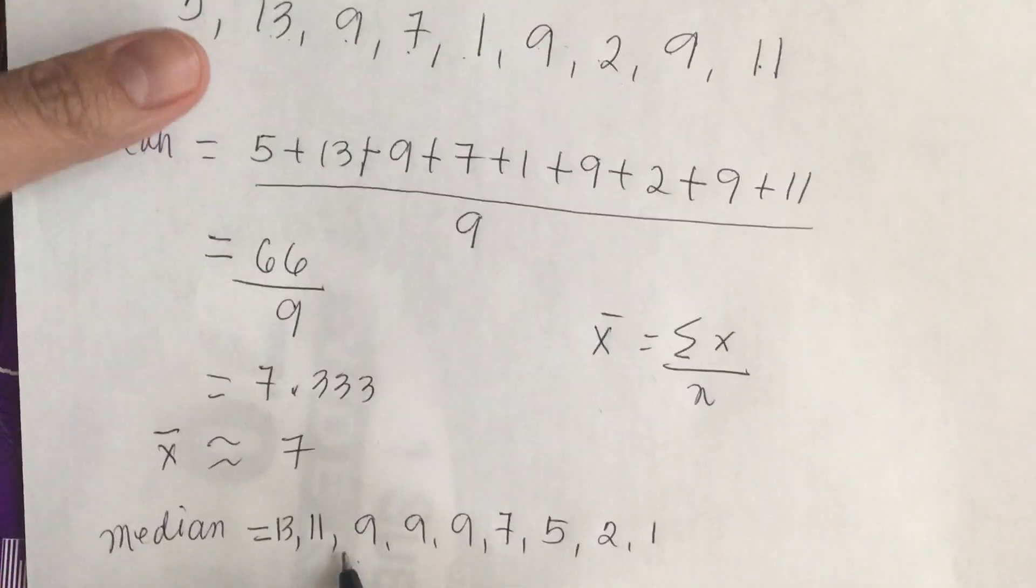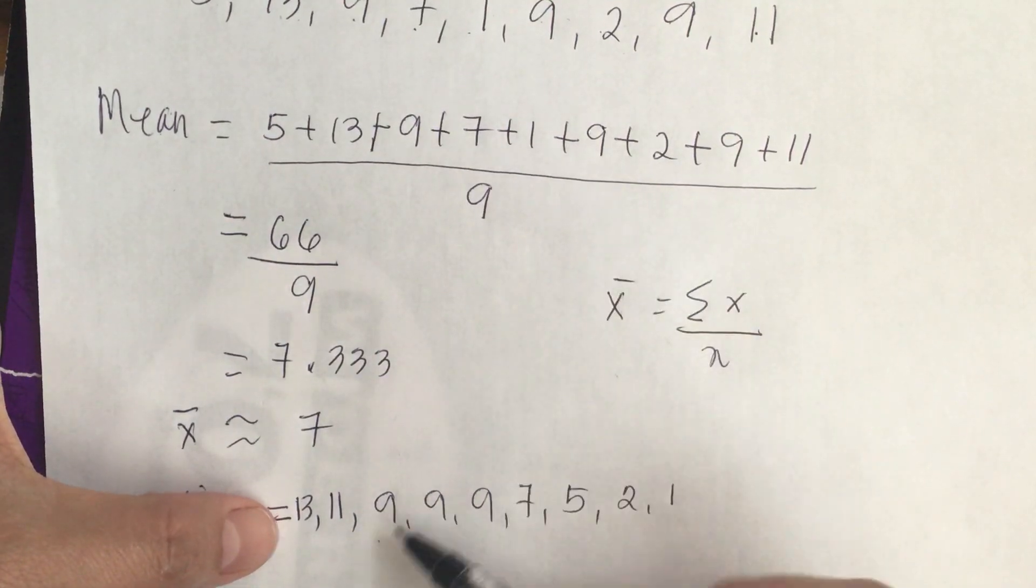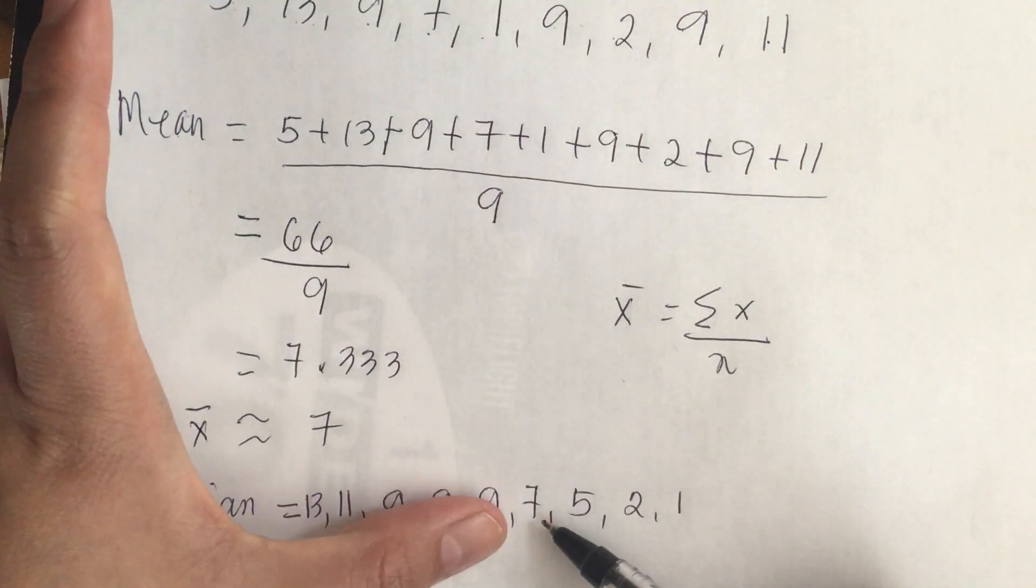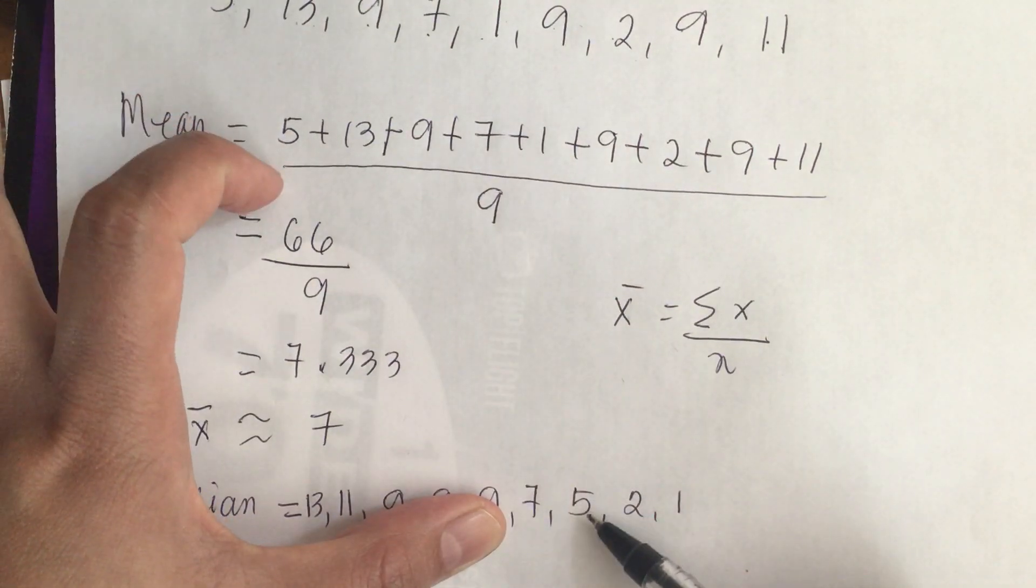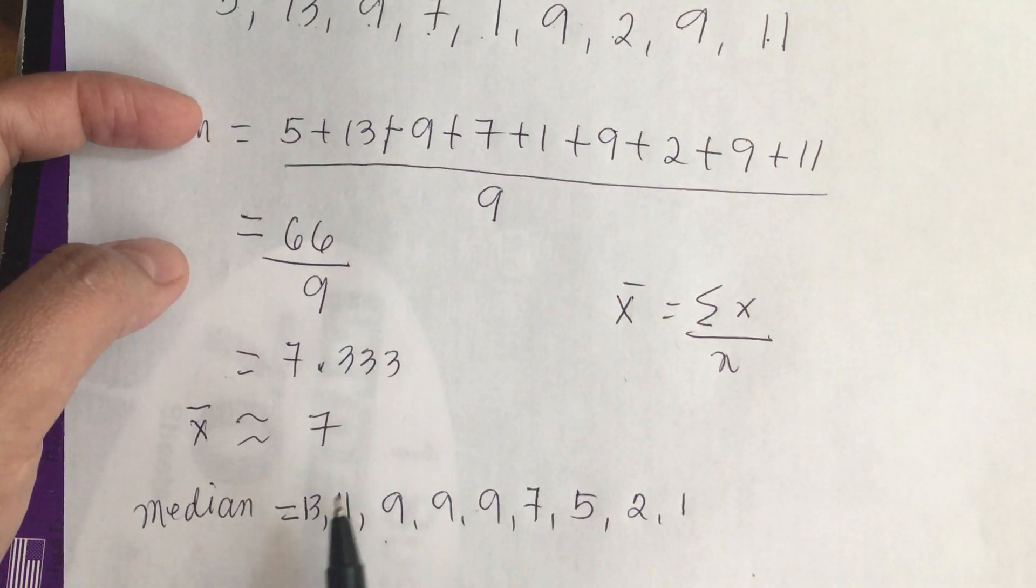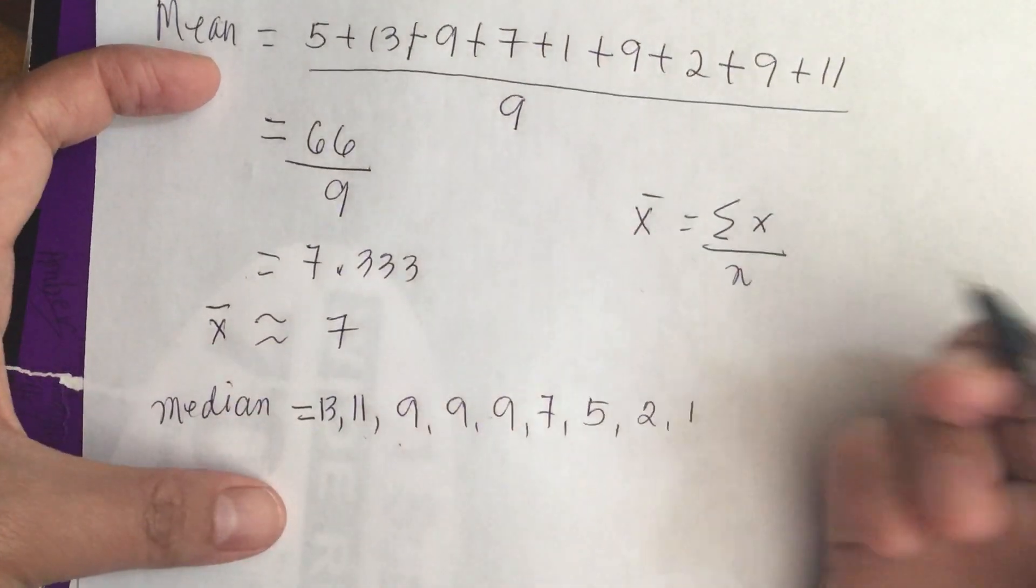Let's double check our numbers. We have a 13, 11, 3 nines, then 7, 5, and then a 2 and a 1. So 1, 2, 3, 4, 5, 6, 7, 8, 9. We have 9.